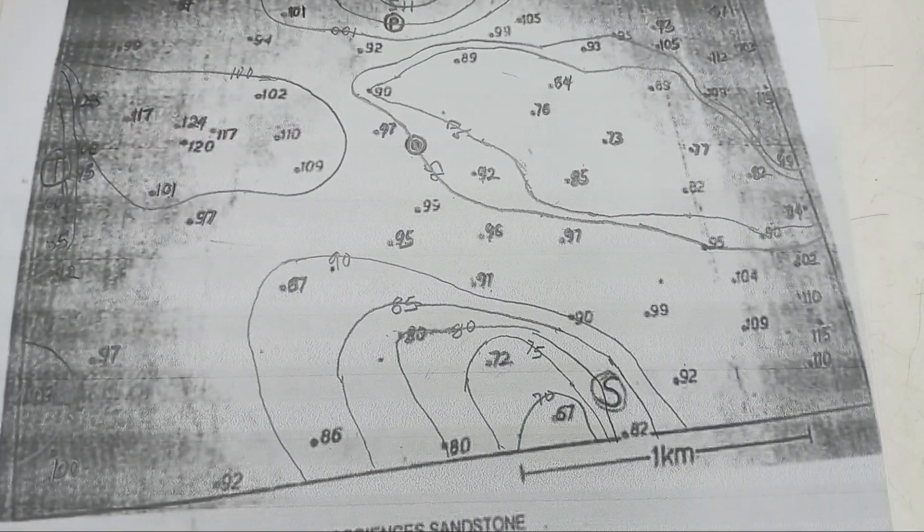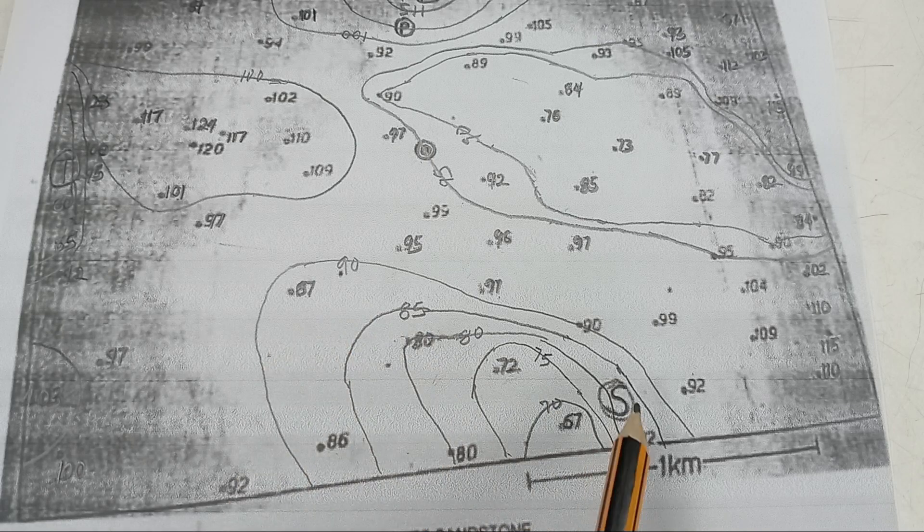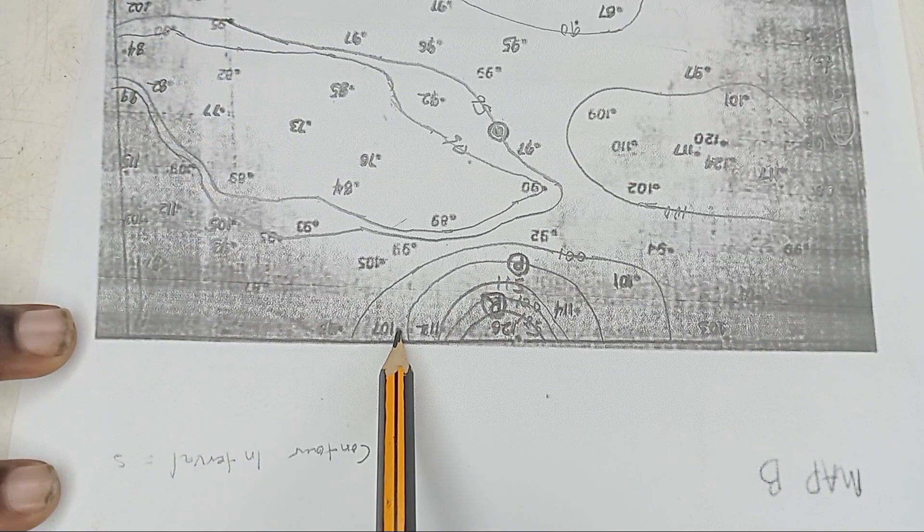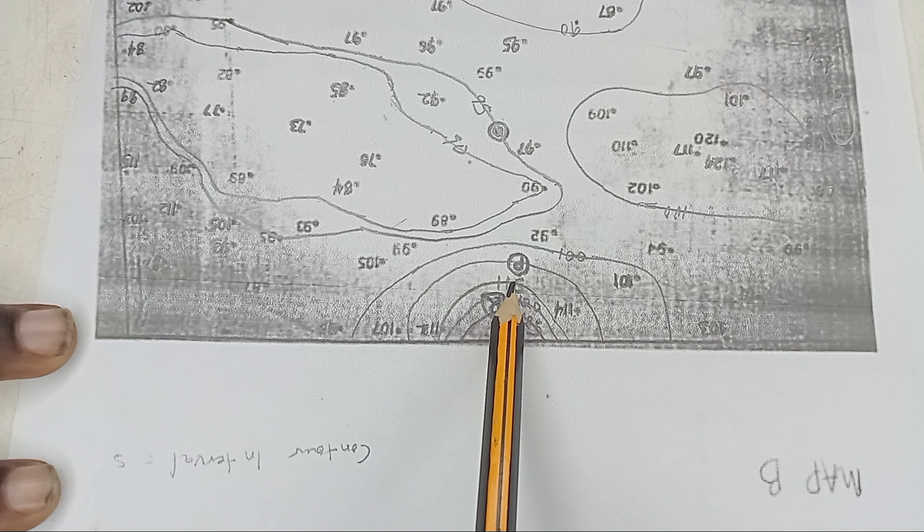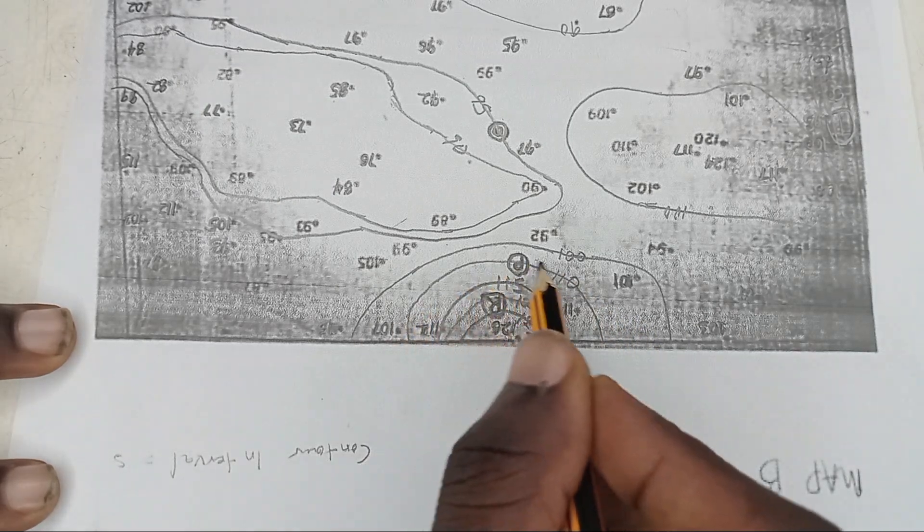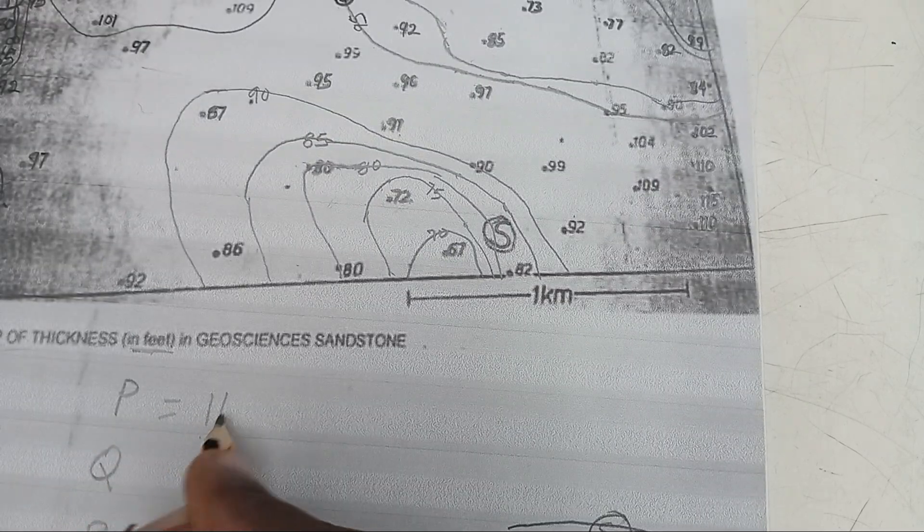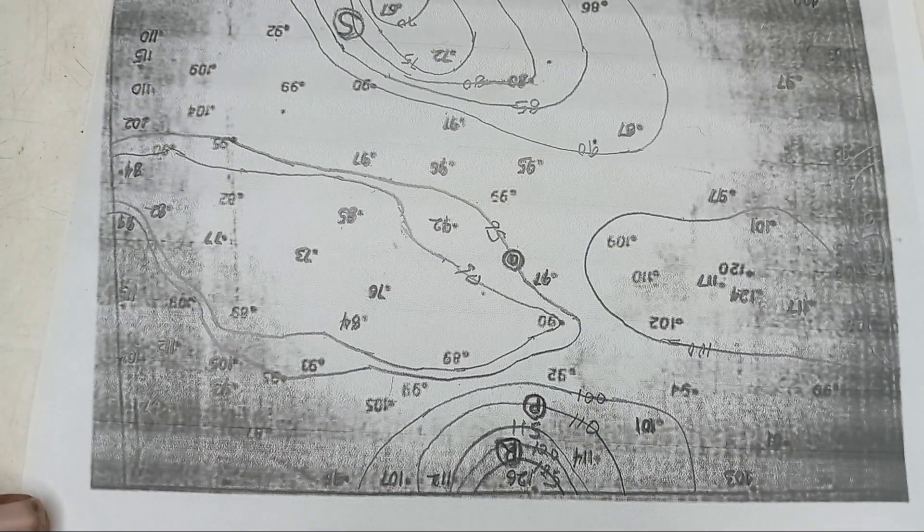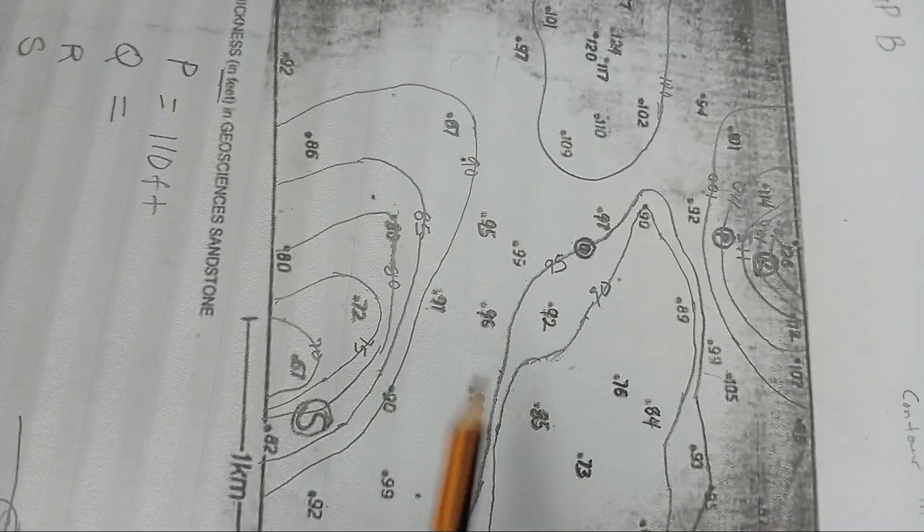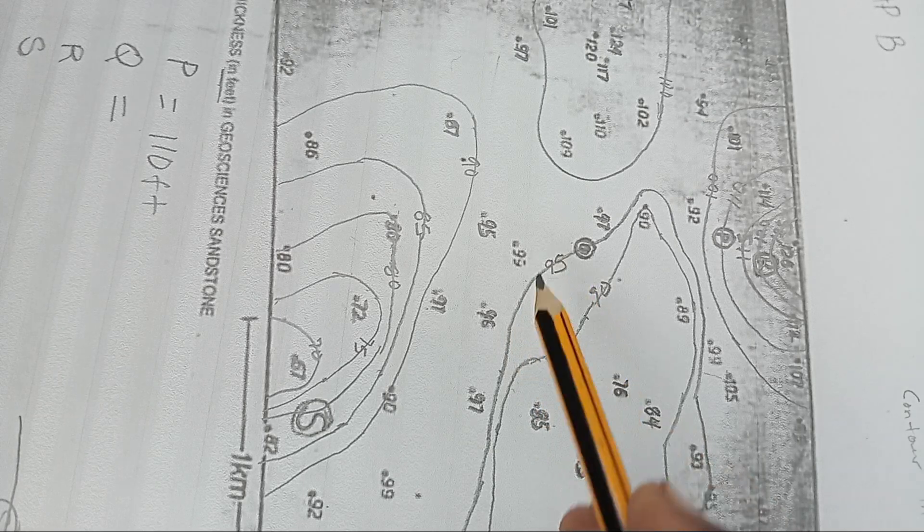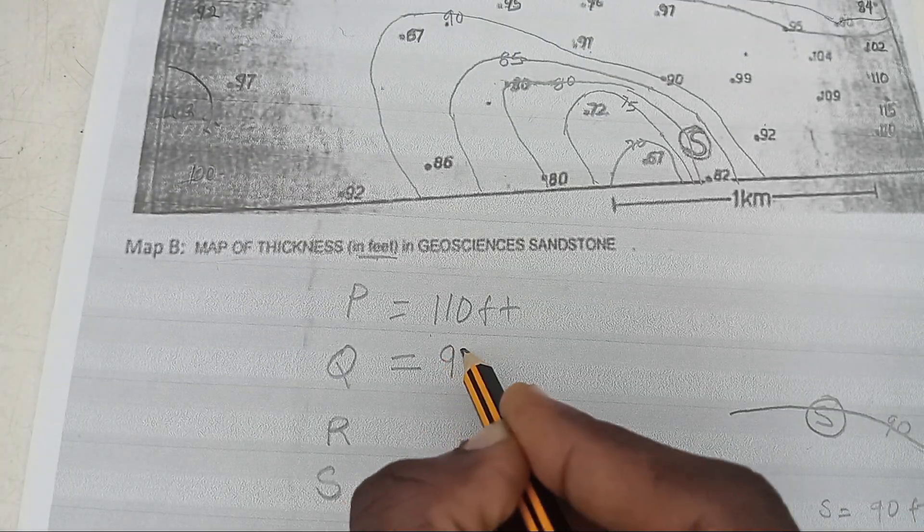But if it is more than one contour that passed through something, if here is 100, here is 90, what do you do? You find the mean of the contour. So you have 100 plus 90 divided by 2. That gives us 190 over 2, and that's 95 feet. Now let's go back to our map. Here, let's start from P first. This P, what is the contour that passed it? There's only one contour that passed through here. So directly, you just say P is 110 feet.